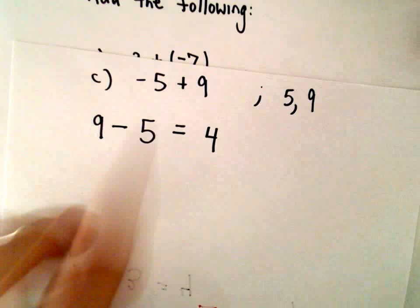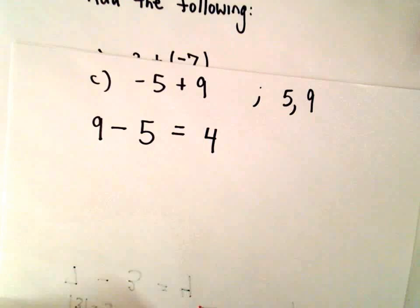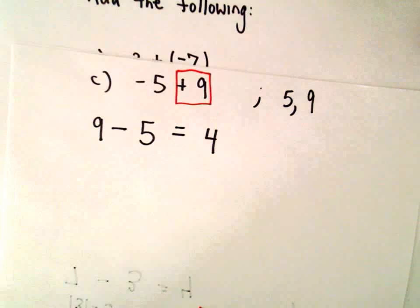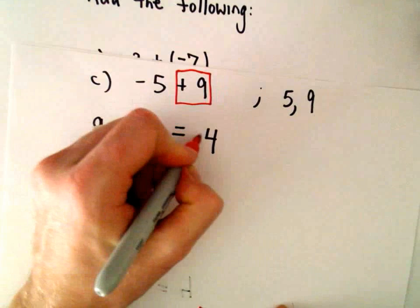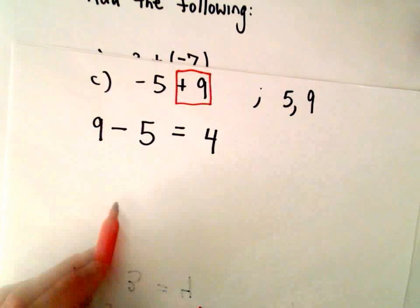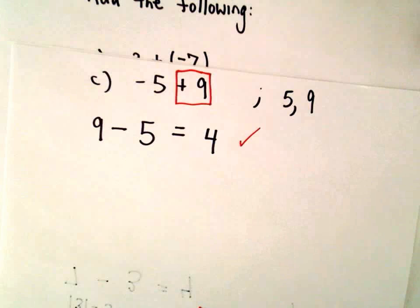And again, if I look at the absolute value of negative 5 and the absolute value of positive 9, the positive part is going to have the larger absolute value, so we're going to keep this as a positive number. So negative 5 plus 9 is the same thing as 9 minus 5, or we get positive 4, and that's our solution.